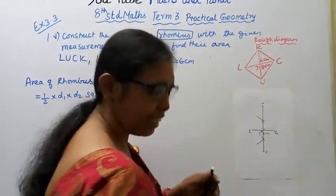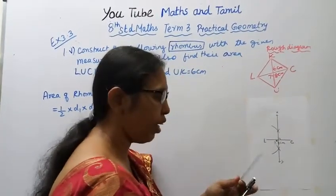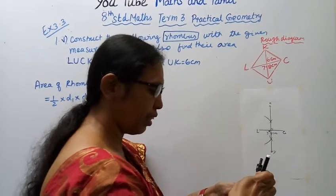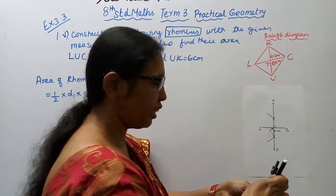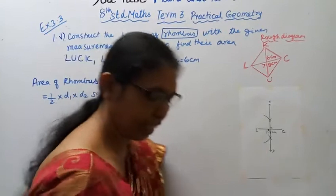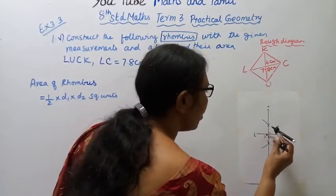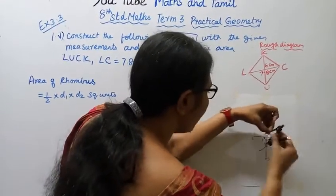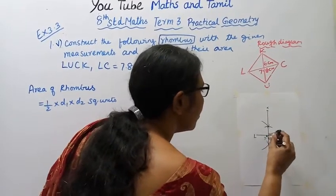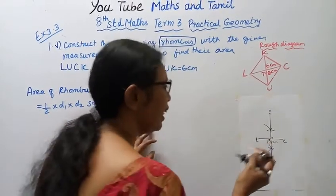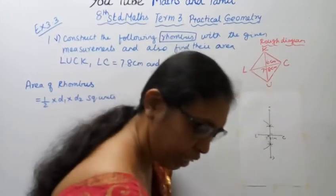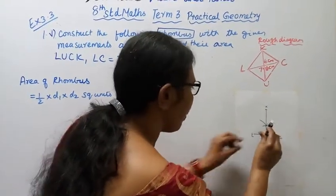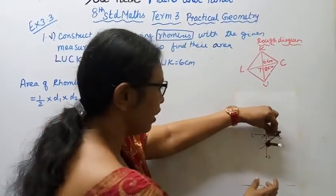Now for UK: UK is equal to 6 cm. Half of 6 is equal to 3. So we take 3 cm on each side. Cut and cut — mark the arcs at 3 cm above and below the intersection point.